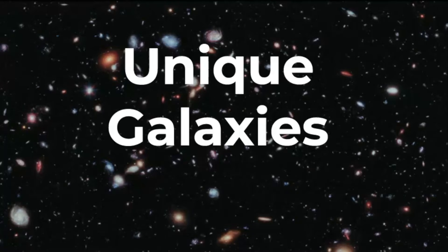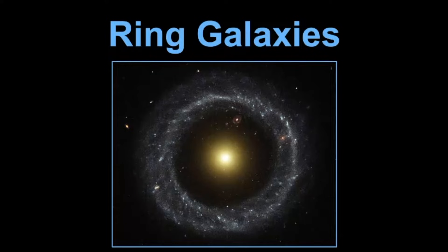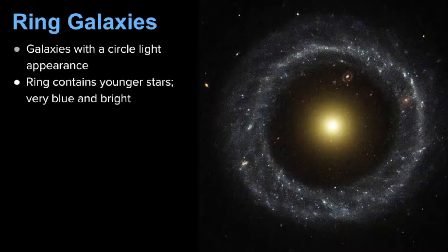In the next portion of this video, we're going to take a look at some unique galaxies that exist in our universe. Ring galaxies are interesting because they are galaxies with the appearance that they have just a circle of light around them. Within this area, there are no spiral arms that are attached to the core of the galaxy. The ring itself contains younger stars. They're often very blue and bright.